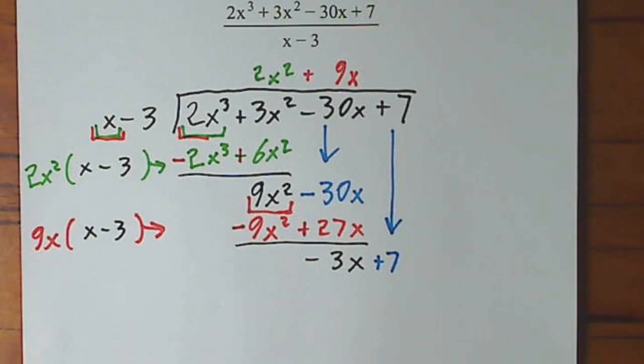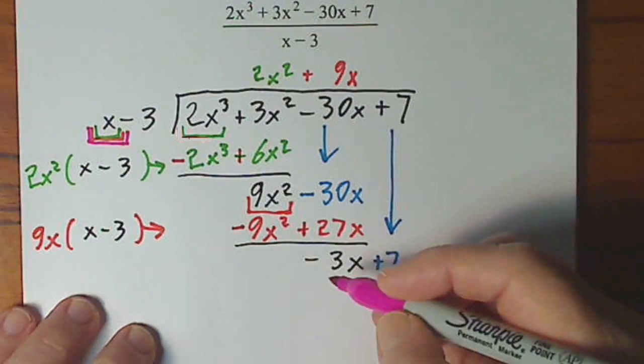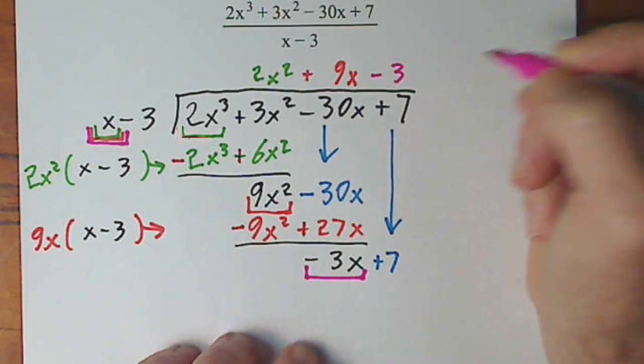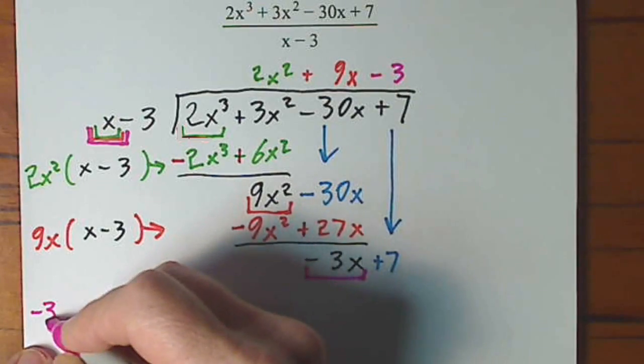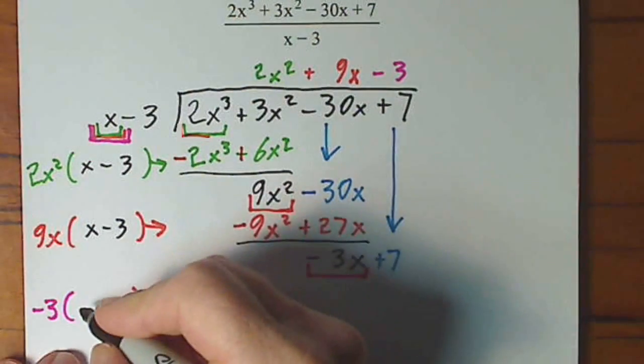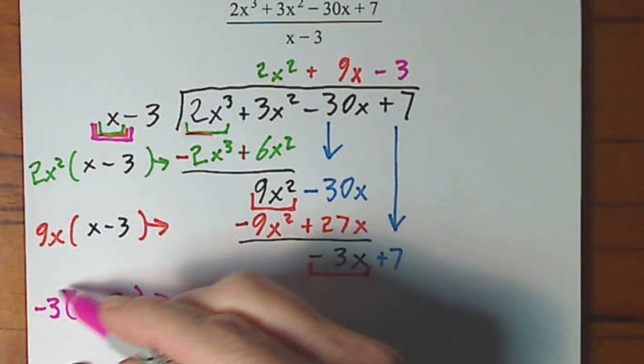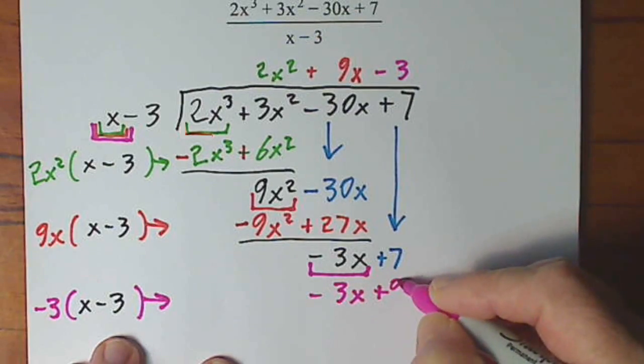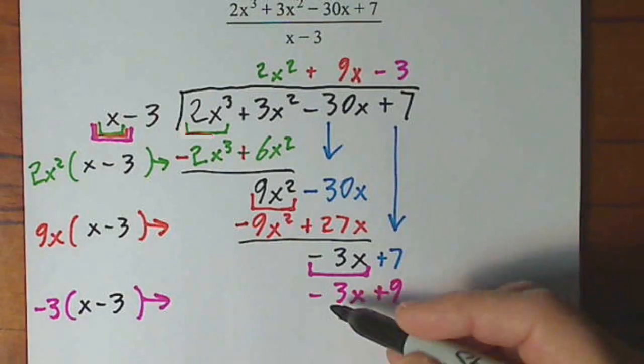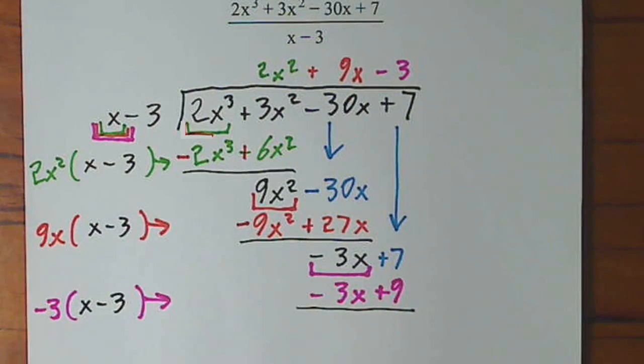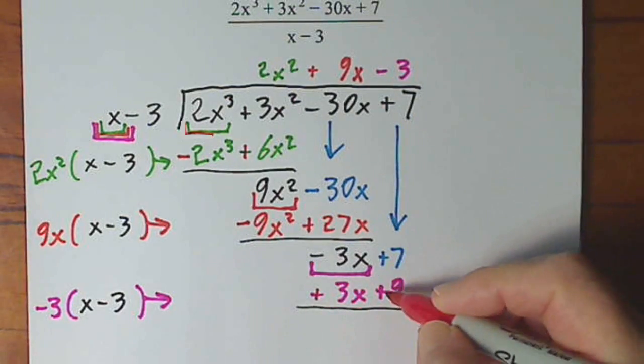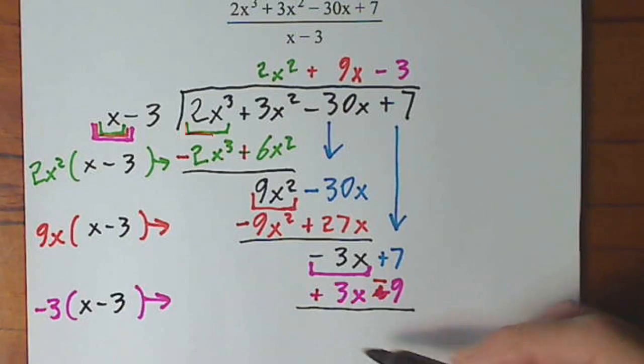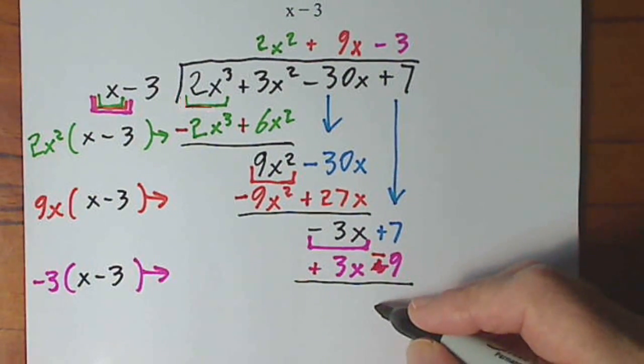And again, you focus on just the first term. So I'm looking at my x here and my negative 3x there. x goes into negative 3x, negative 3 times. So then I say negative 3 times x minus 3, and that yields, distribute this negative 3 to each term, negative 3x plus 9. And again, you have to subtract this binomial, so that means you have to change each sign. And then the result here is negative 3x positive 3x, that's a zero. Positive 7, negative 9 leaves us with a negative 2.